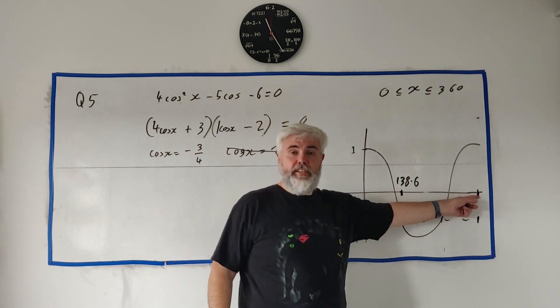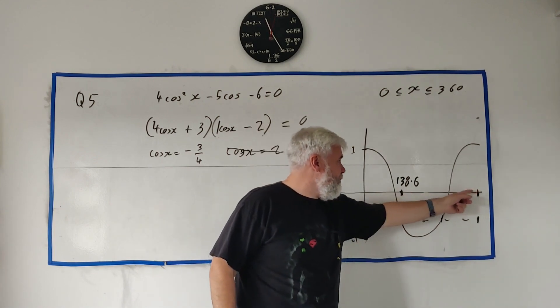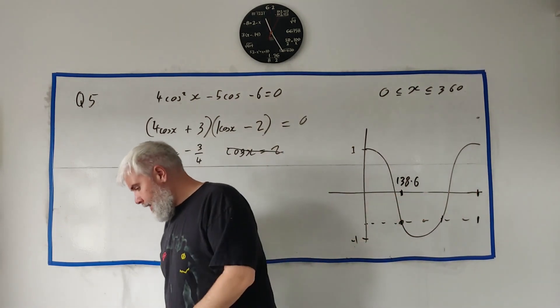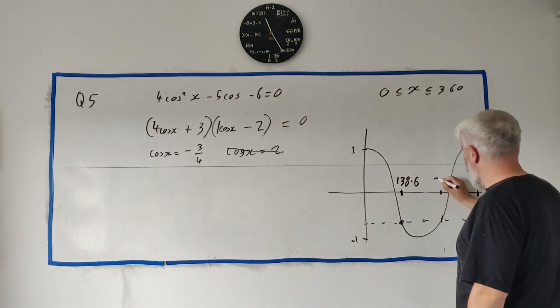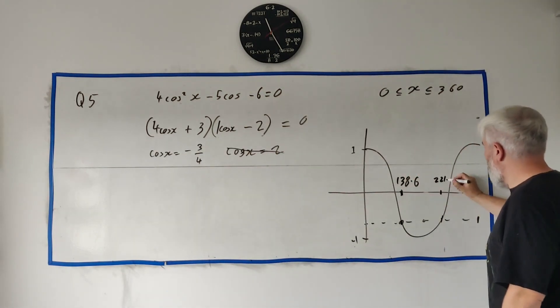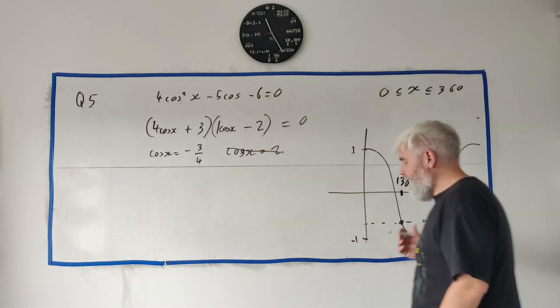Same distance from 360. So we'll just take 360 minus this. And you get over here 221.4. And that's the answers.